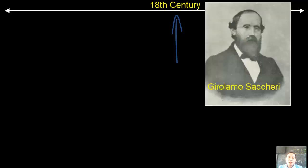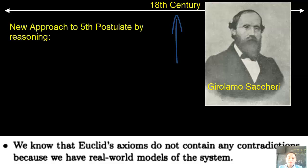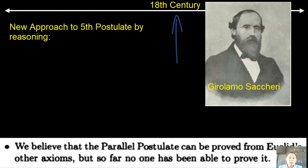On the same century, Italian teacher and scholar Gerolamo Saccheri tried a clever new approach to the fifth postulate. He reasoned: Euclid's axioms do not contain any contradictions because they are based on real world models. Second, the parallel postulate can be proved from Euclid's other axioms, but so far no one has been able to prove it.